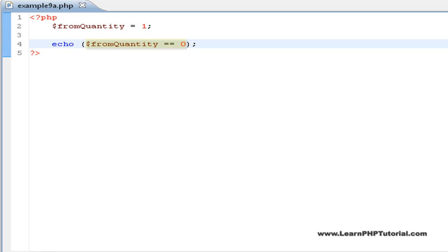What we're looking at here is a comparison statement, testing whether from quantity is equal to zero. Because we've assigned 1 to from quantity right above it, we can reasonably expect this to be false.